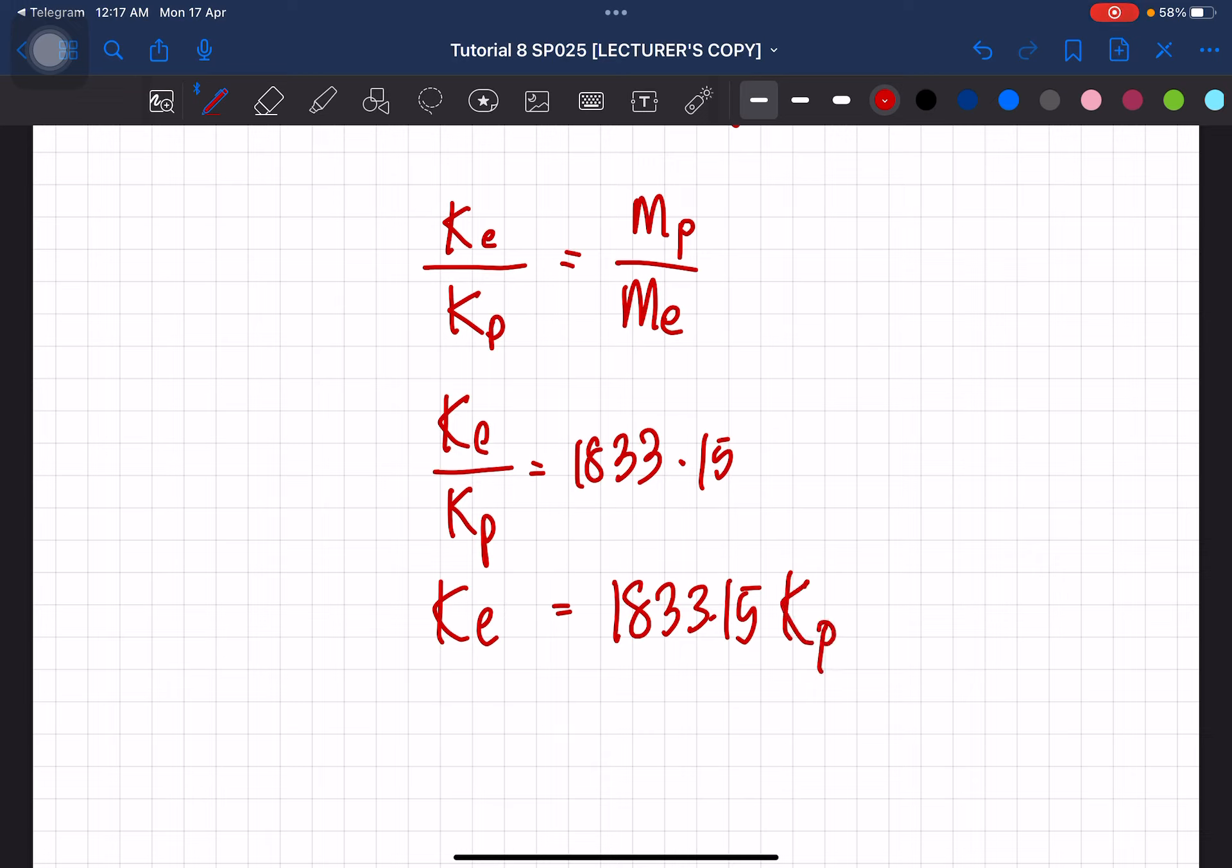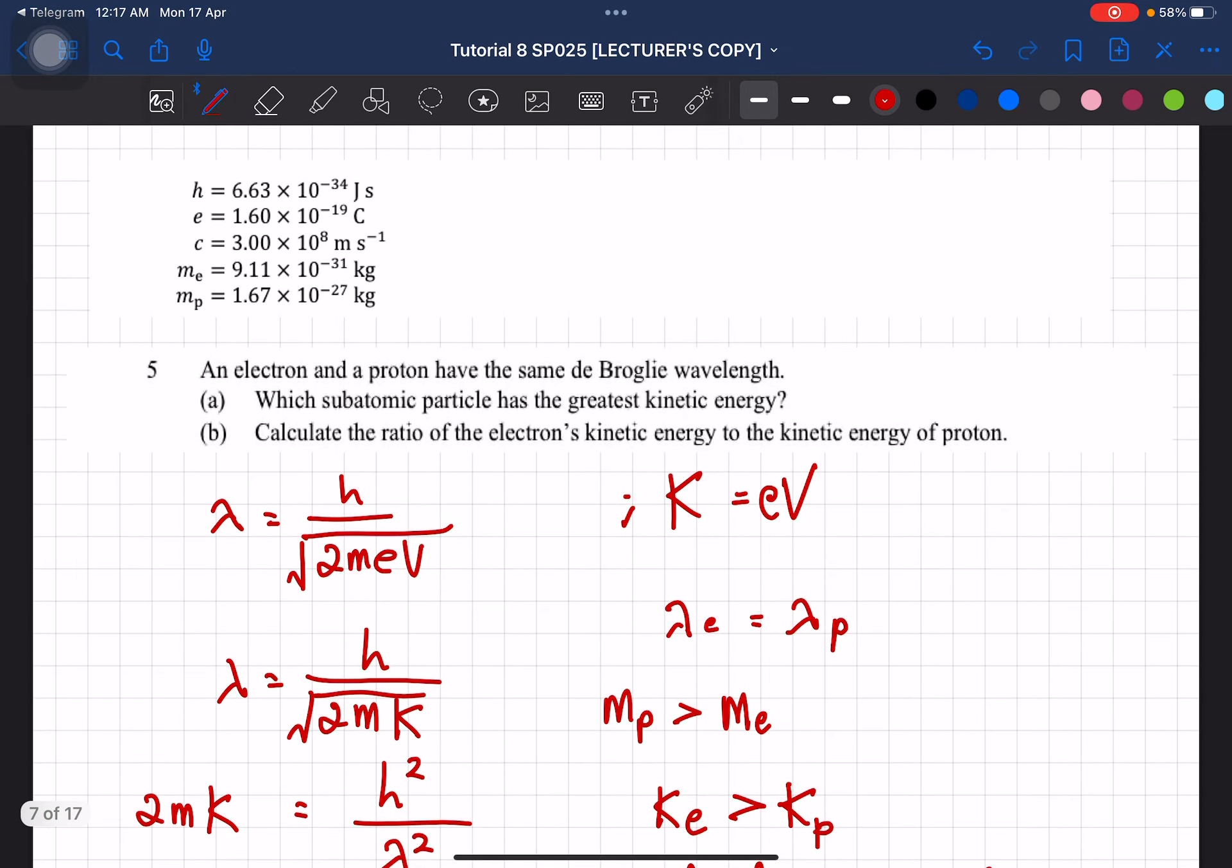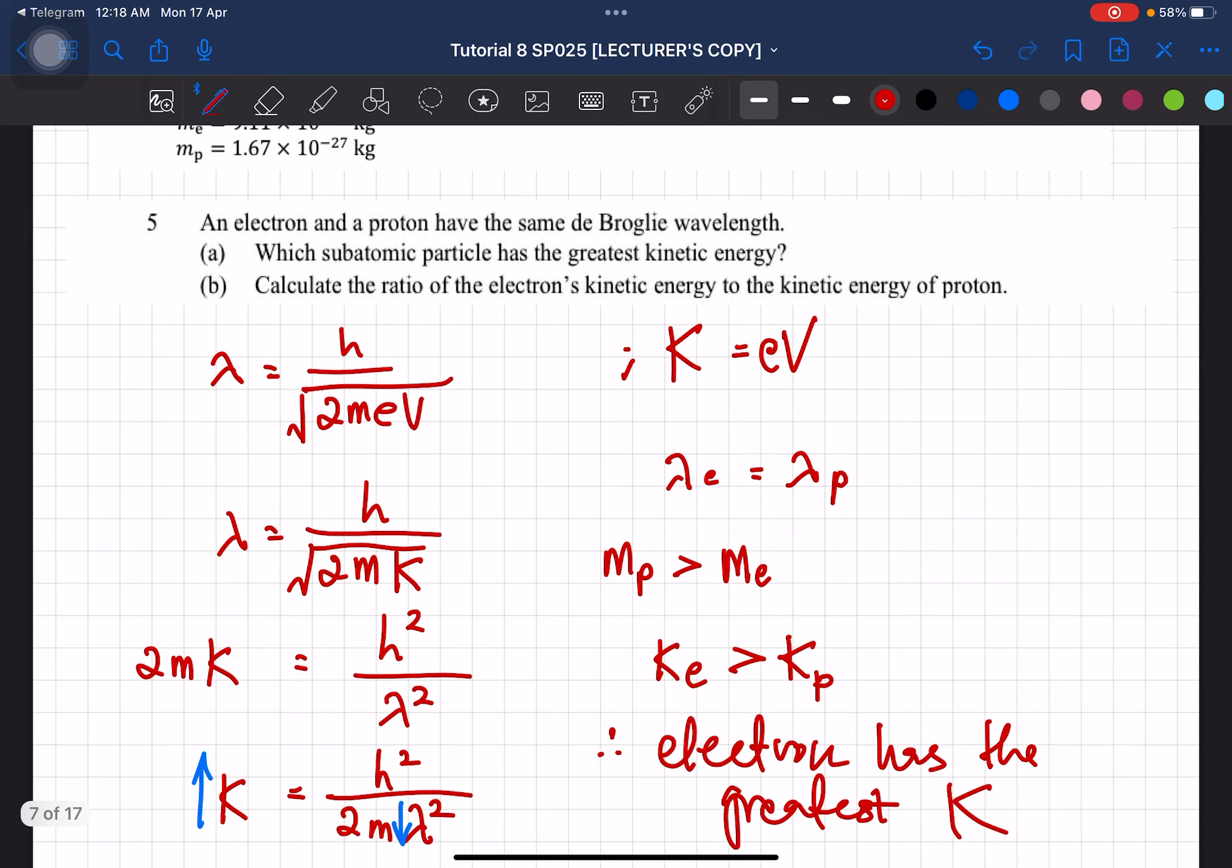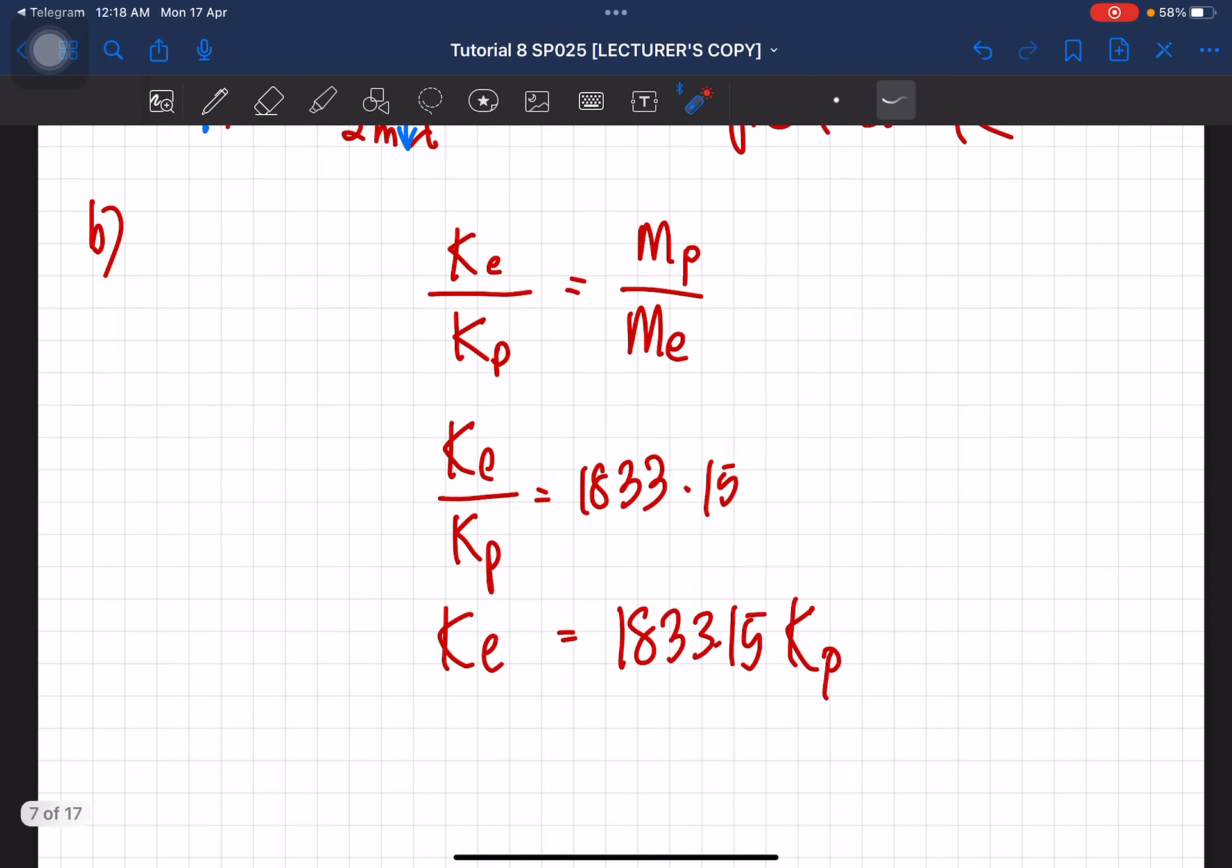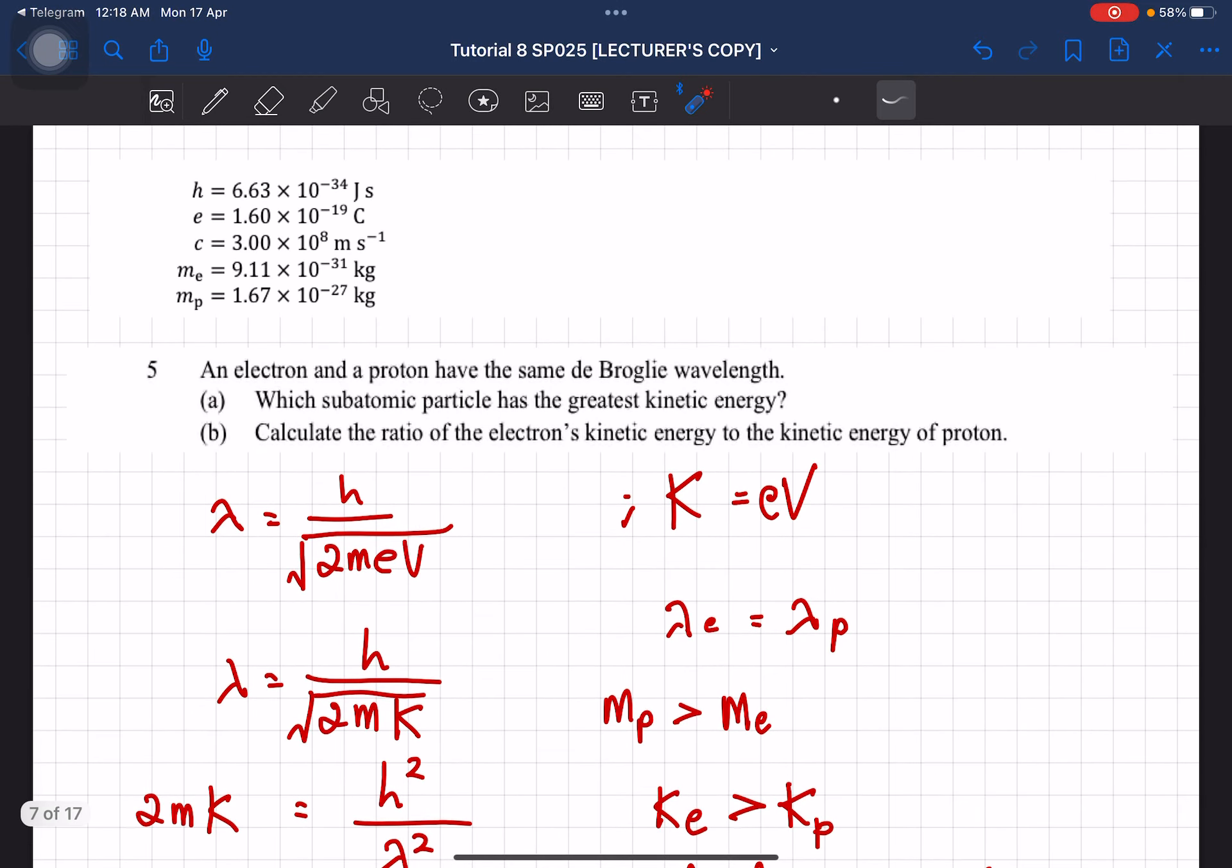Okay, macam tu lah. Kamu bali nampak macam ni. Okay, so that is question A. Okay, next, calculate the ratio of the electrons kinetic energy to the kinetic energy of proton. So sekarang kita perlu calculate the kinetic energy. Yung saya buat tau dila tu. Okay, so this one is basically the ratio of kinetic energy of electron to the kinetic energy of proton. So kamu akan dapat yang ini. So this is the ratio lah. 1.83 times 10 to the 3. Atau pun kamu tulis macam niya lah. Okay, so that is question number 5.